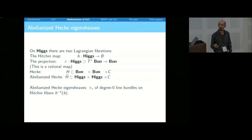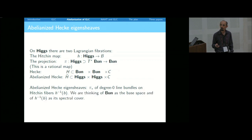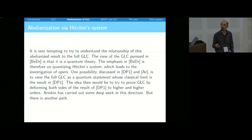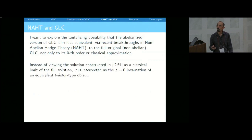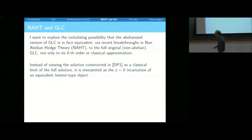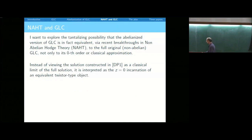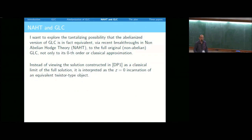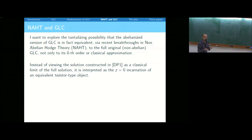In the paper we're responding to, we construct abelianized Hecke eigen-sheaves basically as direct images of degree-zero line bundles on the Hitchin fibers. Here is a naive way to think about it which I've never been able to make work, but I've always been fascinated by it — I always feel it's the simplest way to think about what's going on.